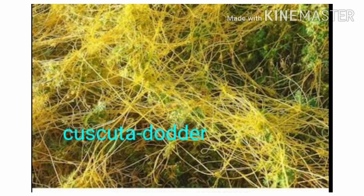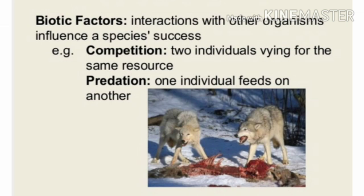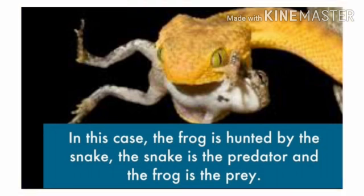The third category of relationship between biotic organisms is predation, which is also negative: one organism benefits while the other is at a loss. For example, a snake hunts, kills, and eats a frog — the snake benefits while the frog is at a loss. The one who hunts and kills another organism for food is called a predator; the snake is the predator, while the frog is the prey.